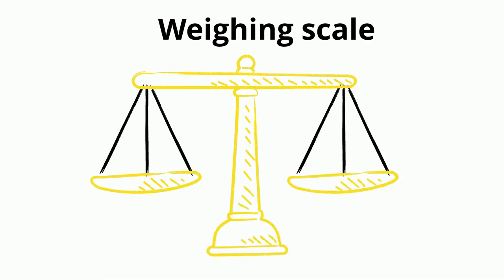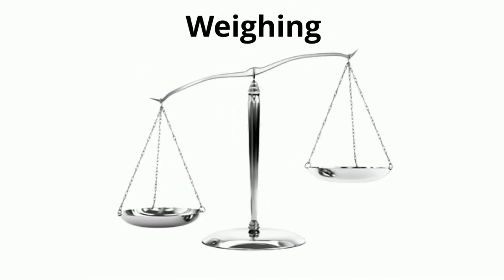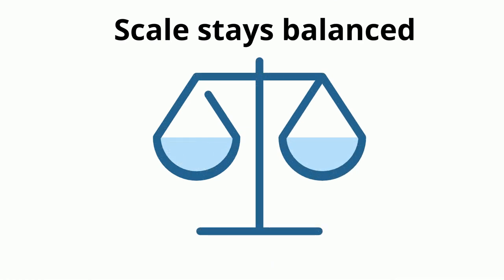When we weigh two objects on a scale, if one object goes down it means it is heavier and the other object goes up it means it is lighter. But if the scale stays balanced, it means both objects have the same weight.